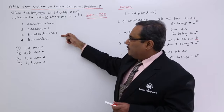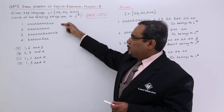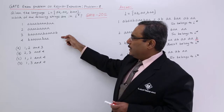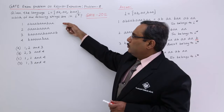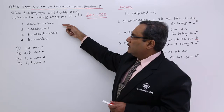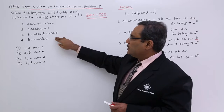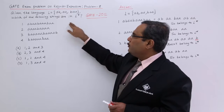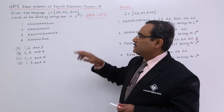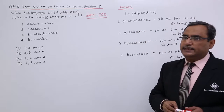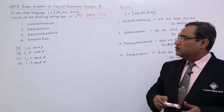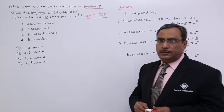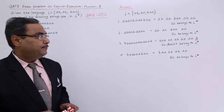Here the strings are given. We shall have to tell which ones are subsets — that means they belong to L star. That is the question being asked. Let us go for the answer.